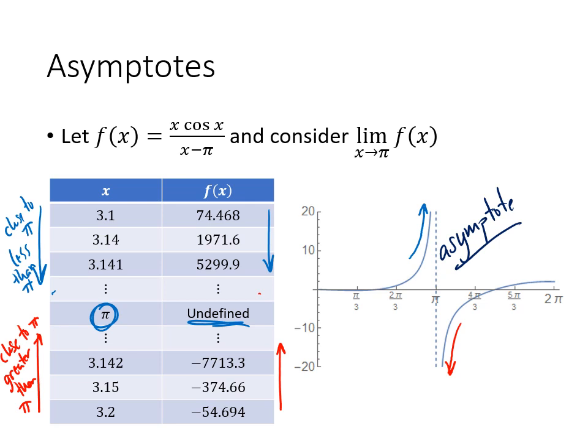And what that means is that the graph of the function is getting closer and closer and closer to that line. In this case, a vertical line, a vertical asymptote. We're going to talk more about asymptotes later in this section, in this chapter. But for now, I just want you to see an example of it. Okay, so that's another thing that can happen with limits.